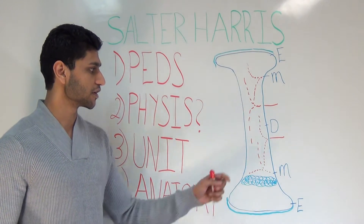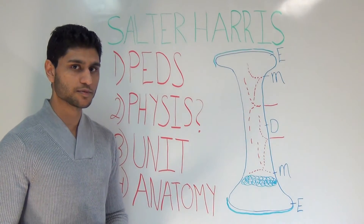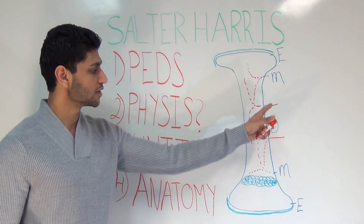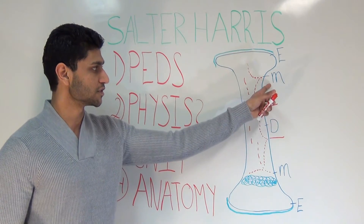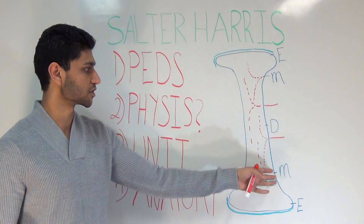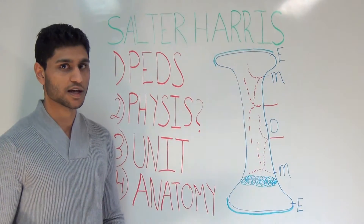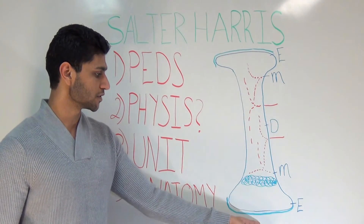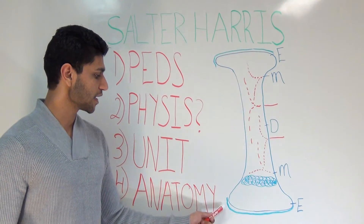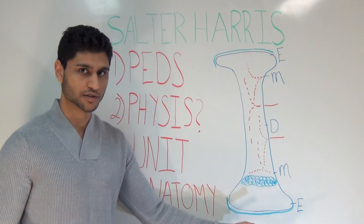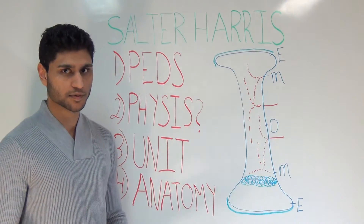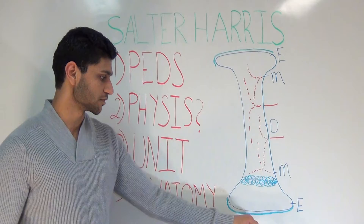Regarding blood supply, blood supply enters from the diaphysis or the metaphysis, from either the proximal or the distal ends of this portion of the long bone. It does not enter from the epiphysis, because the epiphysis is surrounded by hyaline cartilage, and hyaline cartilage does not allow blood supply to enter from there. This is where the joints would be.